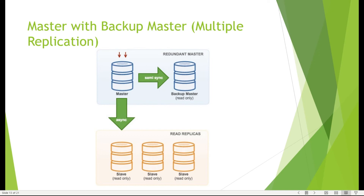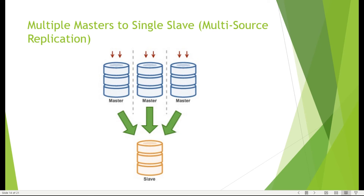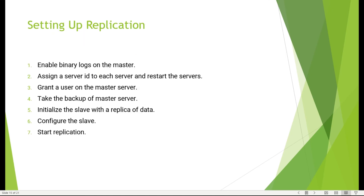We also have a topology with multiple masters feeding into one slave, where data from multiple sources is stored in a single replica. In the next chapter, we'll set up the simplest topology — master and slave — as a hands-on exercise. Thank you for watching and stay tuned for the next one.